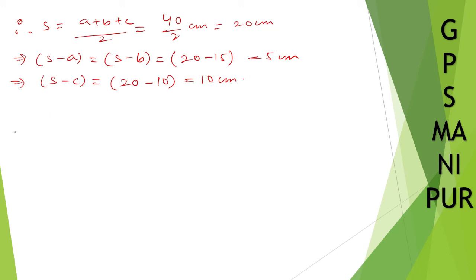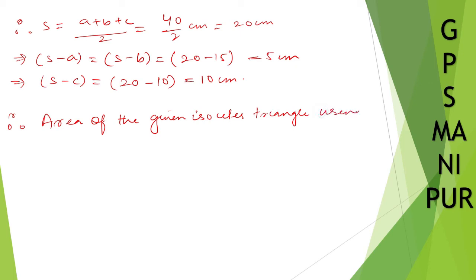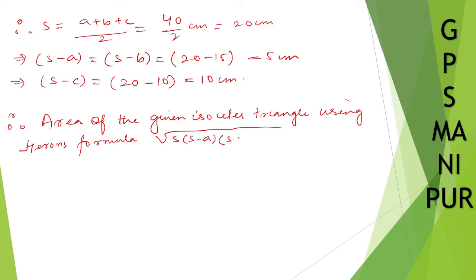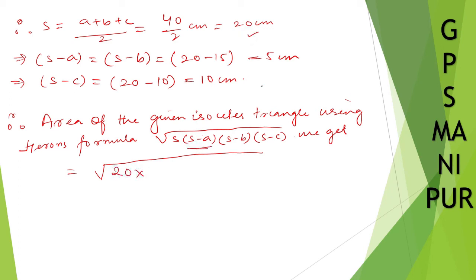Now therefore, area of the given isosceles triangle using Heron's formula. Heron's formula gives us the square root of s times (s minus a) times (s minus b) times (s minus c). So we get the square root of 20 times 5 times 5 times 10.